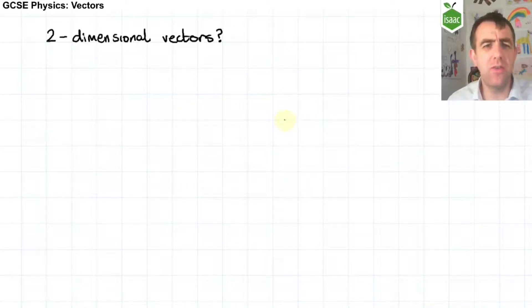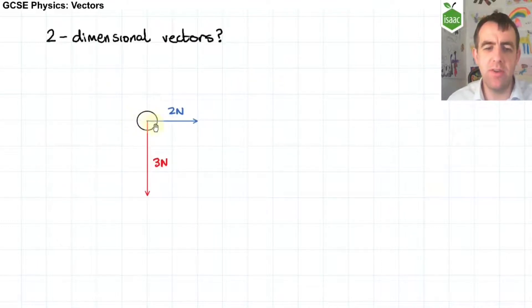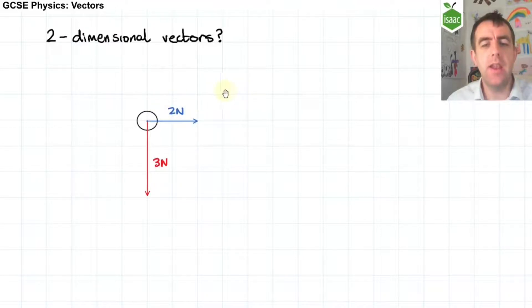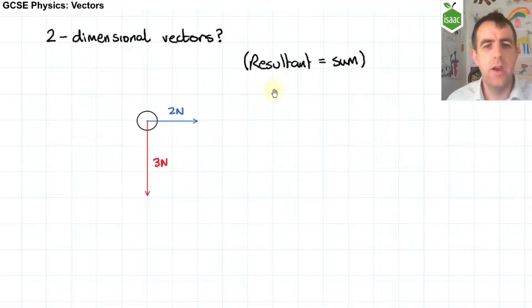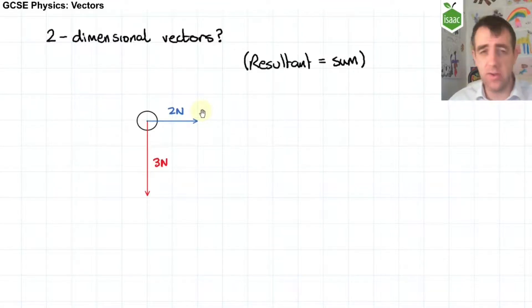So what about two-dimensional vectors? Let's take an example. Here's a free body diagram showing some body which is experiencing 3 newtons of force downwards — perhaps that's its weight — and 2 newtons of force to the right, perhaps it's being pushed somehow. And let's say we want to find what the resultant force is. The resultant force is what we get when we add the forces together, and the resultant vector is what you get when you add two vectors together, whether that vector is velocity, displacement, momentum, or whatever.